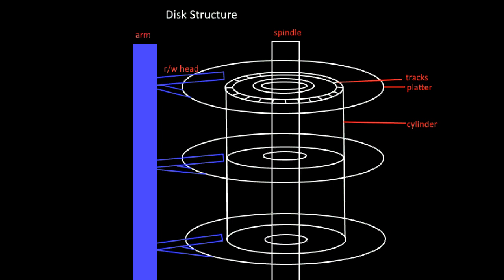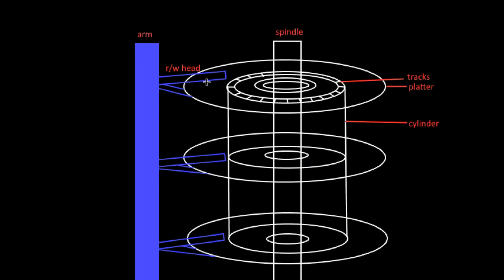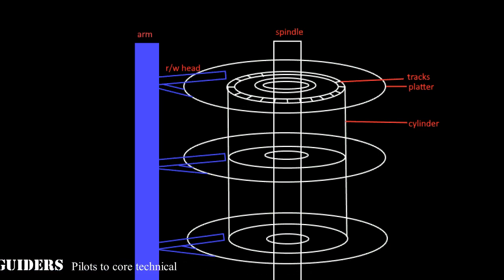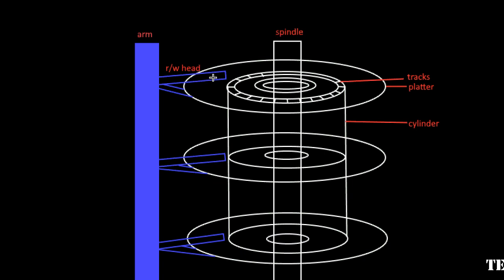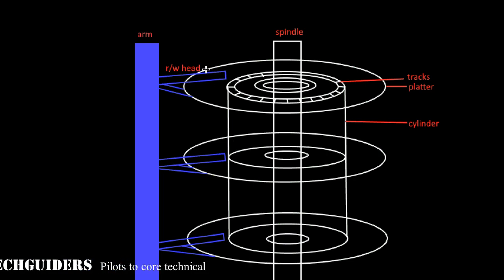Each track is further divided into sectors. By moving the head toward the spindle and away from the spindle, the head can reach each and every track associated with it on its surface. After approaching the correct track, the head stays at its position and the platters rotate about the spindle — usually all the platters together. This way the head can reach each and every sector on the corresponding track, and is able to access all data on the surface.